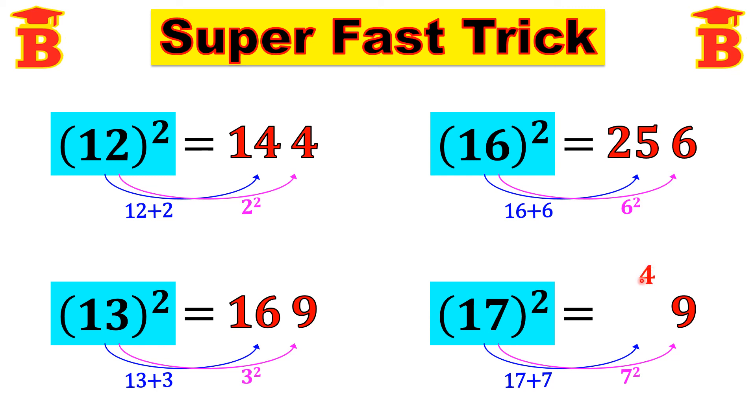We have to add the carry number. So 24 plus 4 is 28. So we get 289. Therefore 17 square is 289.